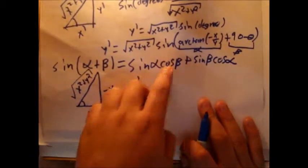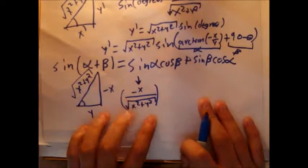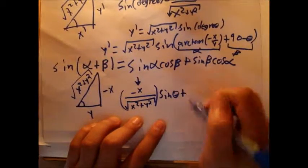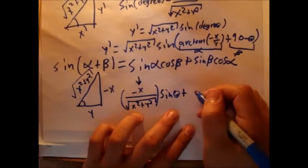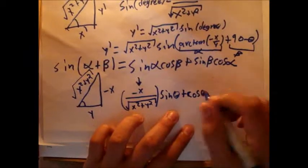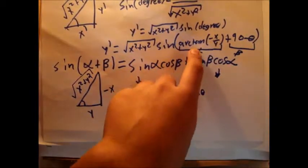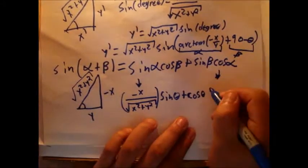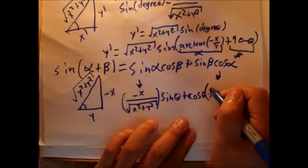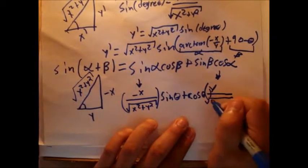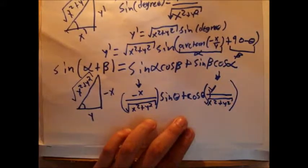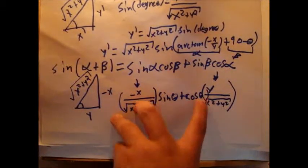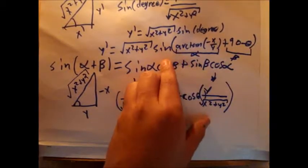Then cosine of beta: cosine of 90 minus theta is just sine theta. Next, sine of beta: sine of 90 minus theta is just cosine theta. And cosine of alpha: using the same triangle, cosine is adjacent over hypotenuse, which is y over the square root of x squared plus y squared. So the full expression reads: negative x over square root(x² + y²) times sine theta, plus cosine theta times y over square root(x² + y²).